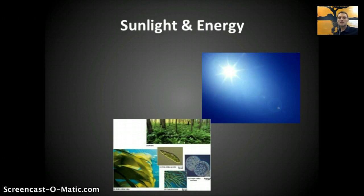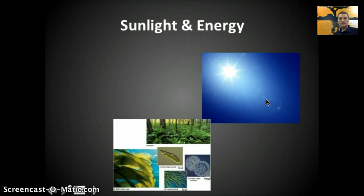To begin, we need to discuss where that energy is coming from. Where this all starts is from the sun. Sunlight provides and supplies energy for most ecosystems. This can differ depending on the environment — for example, a desert versus a rainforest is going to have very different amounts of sunlight, but that sunlight is providing energy for the organisms that live there.